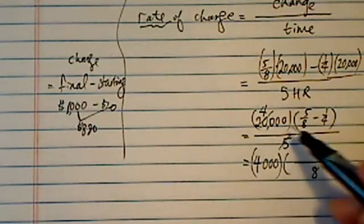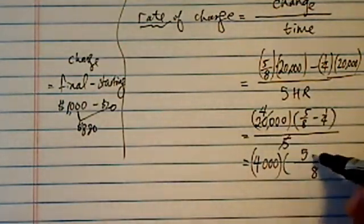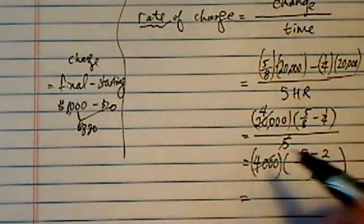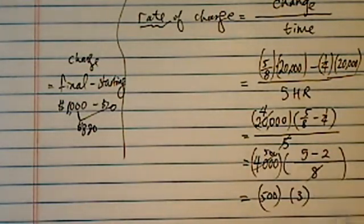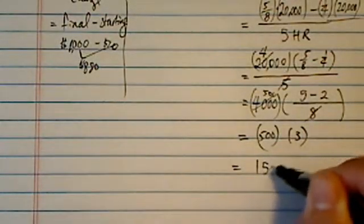So five divided into the 20,000, that's 4,000. And I'm going to make a common denominator here, so I have five minus two. And guess what? Eight goes into the 4,500 times. So 500 times three, and the answer comes out to be 1,500.